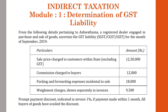The particulars and amounts are: sale price charged to customers within the state (excluding GST) is 12,50,000; commission charged to buyers is 12,000; packing and forwarding expenses incidental to sale is 18,000; weighment charges shown separately in the invoices is 9,500; and there is a prompt payment discount of 1% indicated in the invoice, where all buyers have availed the discount.